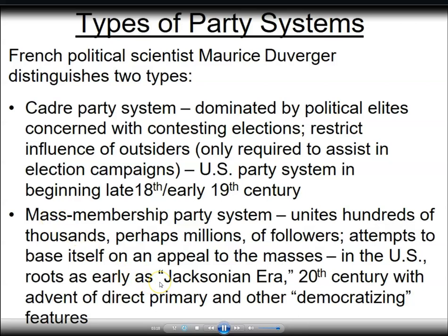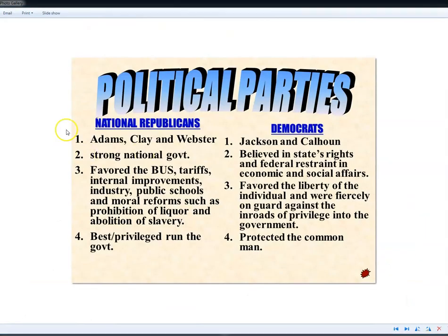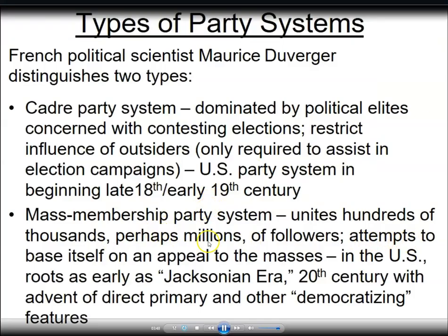The Jeffersonian Republican Party fractured into the Democratic Republicans and the National Republicans. They began to reach out to ordinary voters, which was a fairly limited segment of American society at the time, but it represented the initial efforts of political parties to bring ordinary voters into the political process. That brings us to the mass membership party system, which unites hundreds of thousands, perhaps millions of followers, and attempts to base its appeal to the masses.